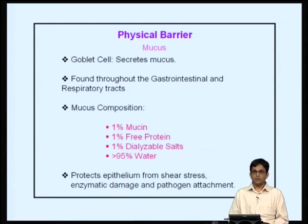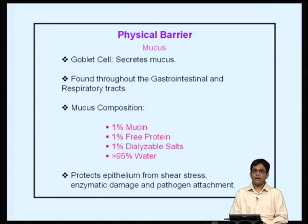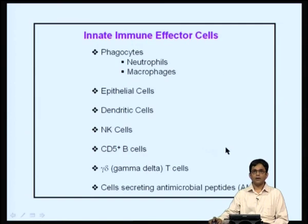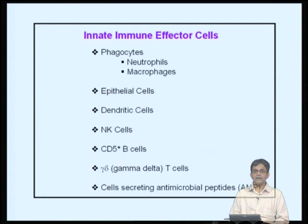Mucus is produced by goblet cells and helps limit the spread of microbes; it is present throughout the gastrointestinal and respiratory tracts. Mucus protects the epithelium from shear stress, enzymatic damage, and pathogen attachment. Several types of cells play an important role in the innate immune response: phagocytes, epithelial cells, dendritic cells, natural killer cells, CD5-positive B cells, gamma-delta T cells, and cells secreting antimicrobial peptides, some of which will be discussed in greater detail.